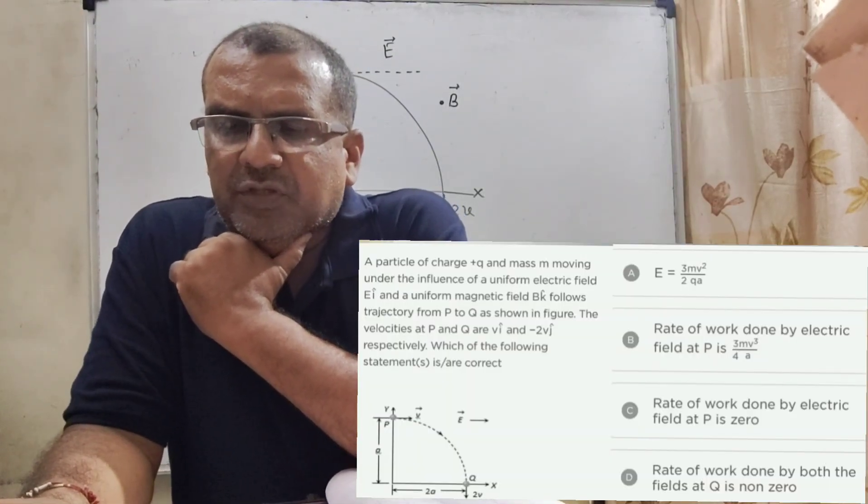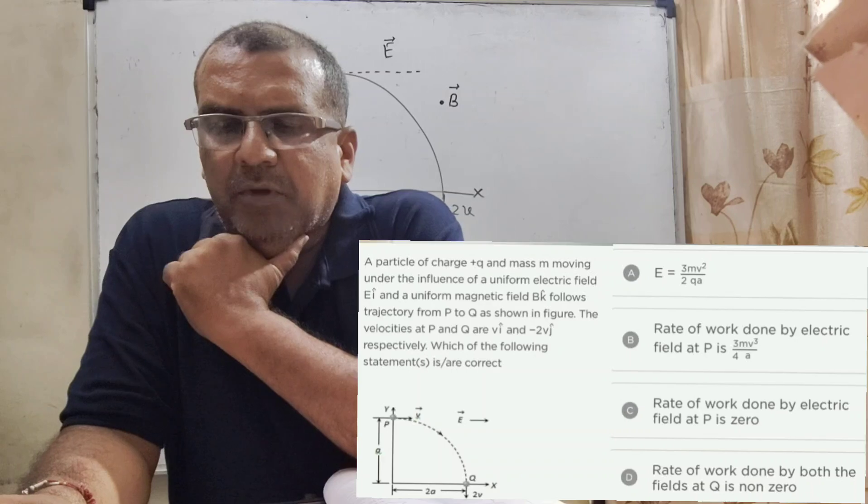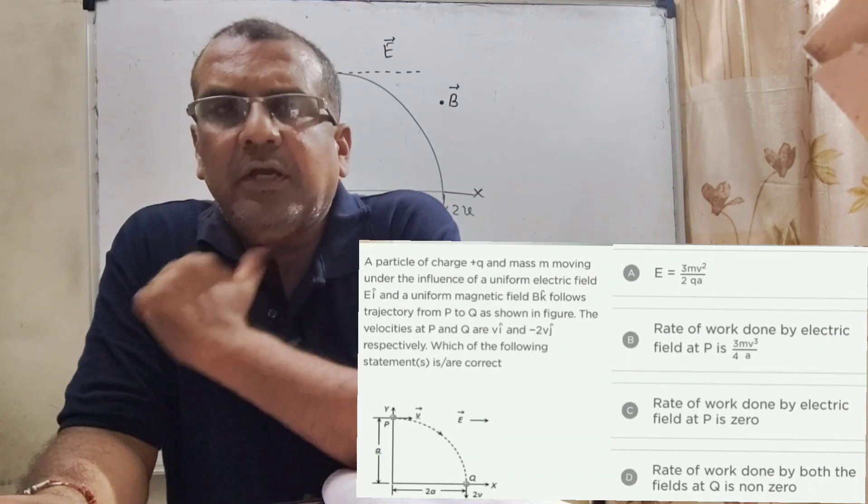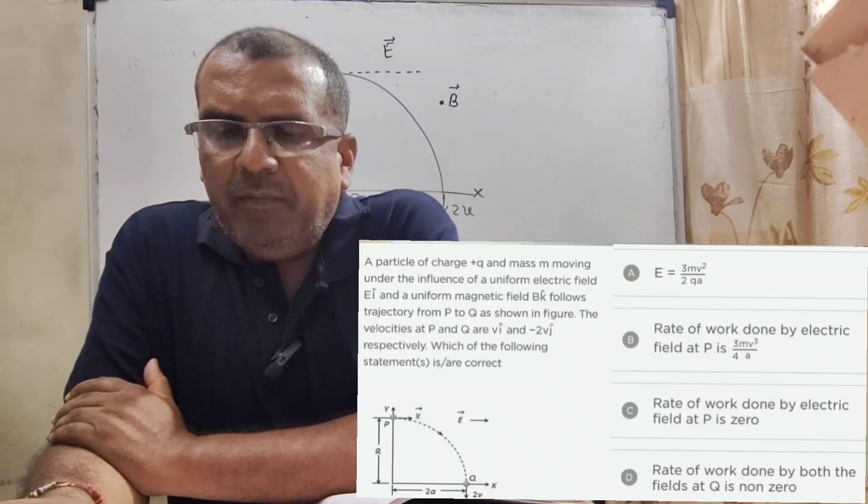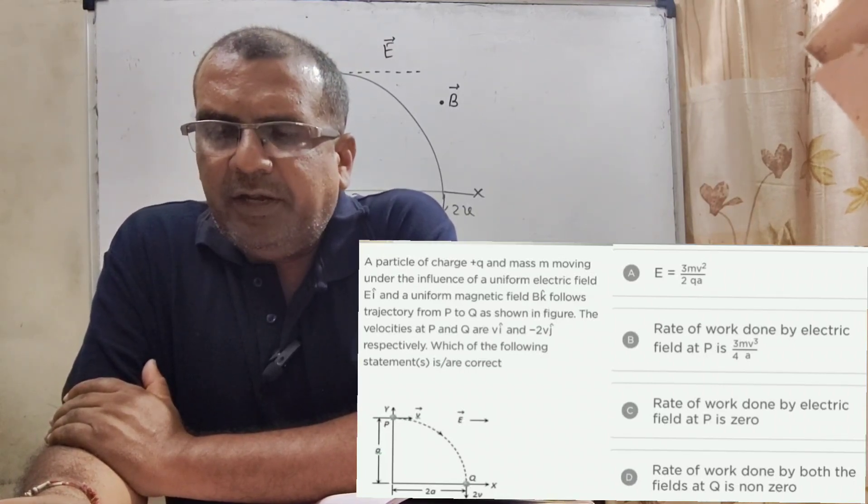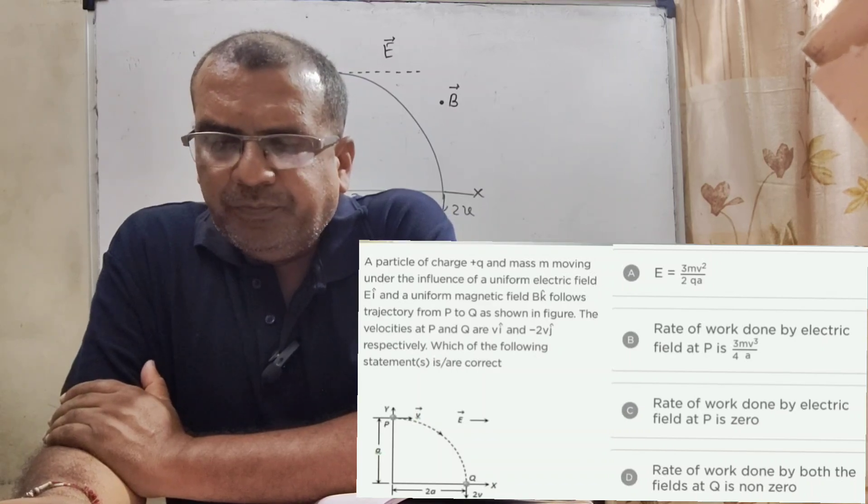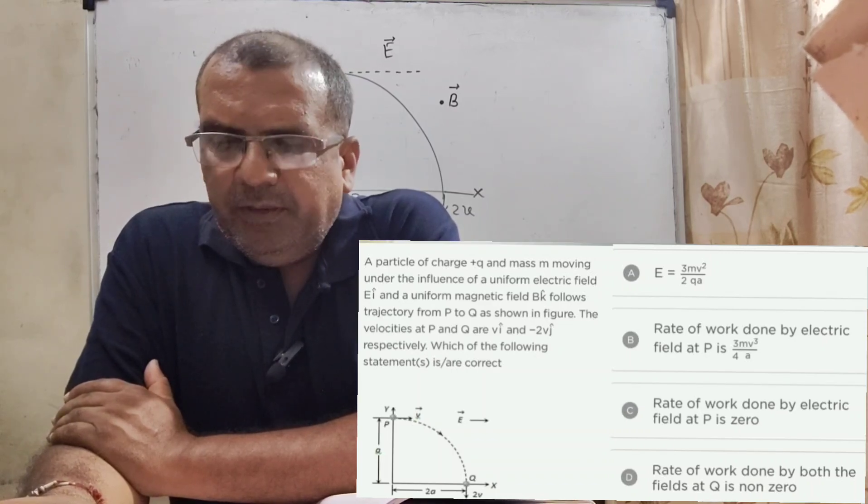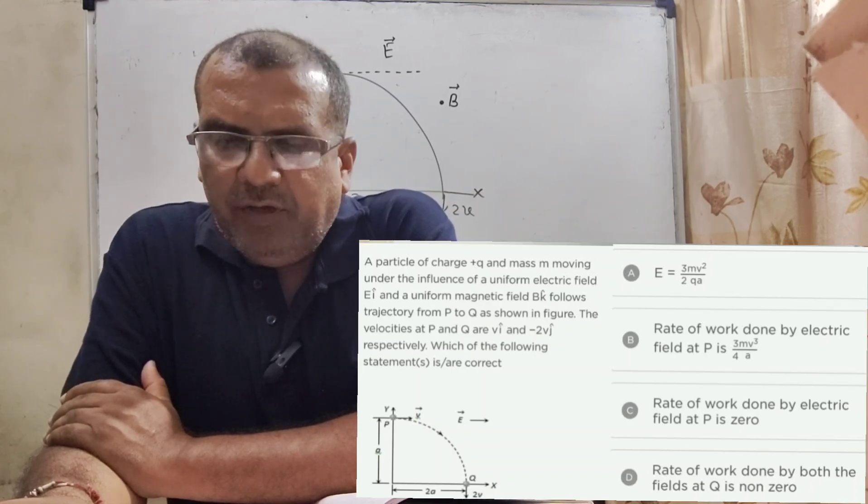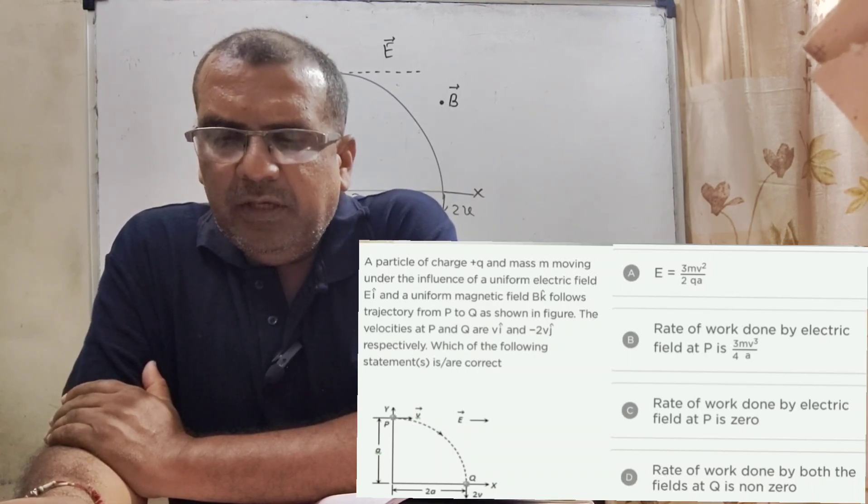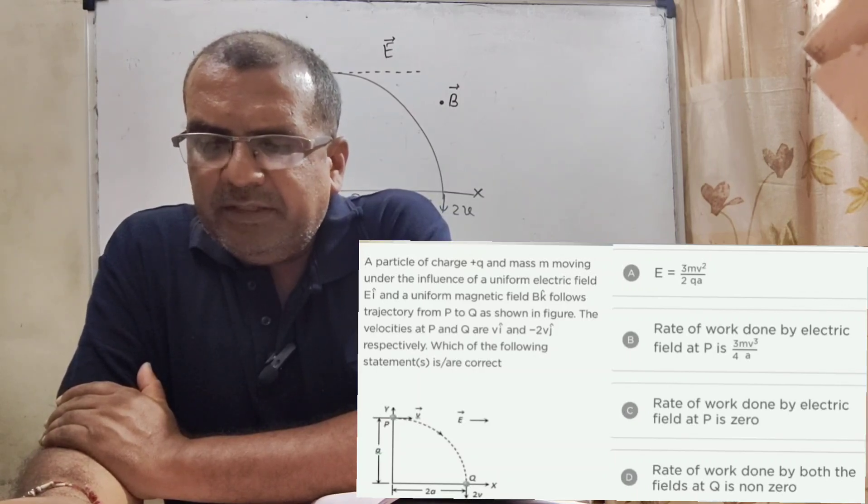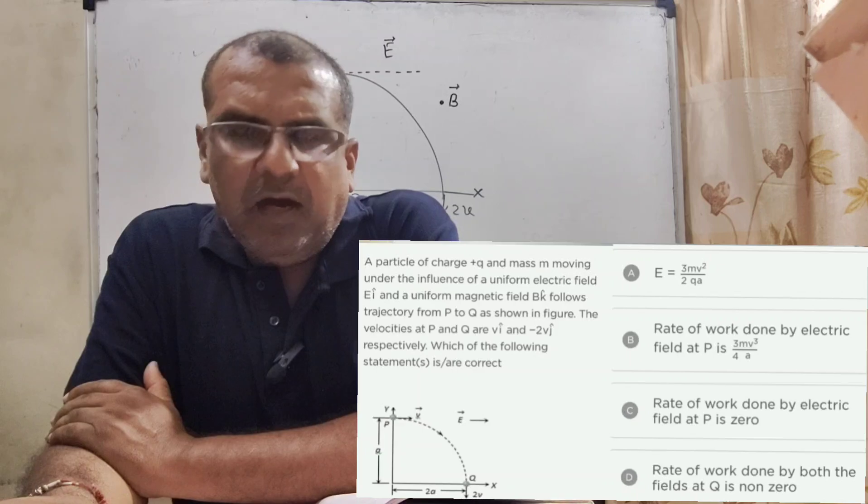Now, here is the question. A particle of charge +Q and mass M moving under the influence of a uniform electric field E i unit vector and uniform magnetic field B k unit vector follows a trajectory from P to Q as shown in the figure.